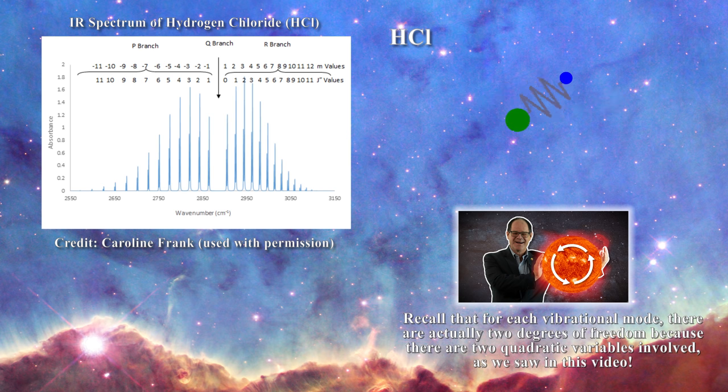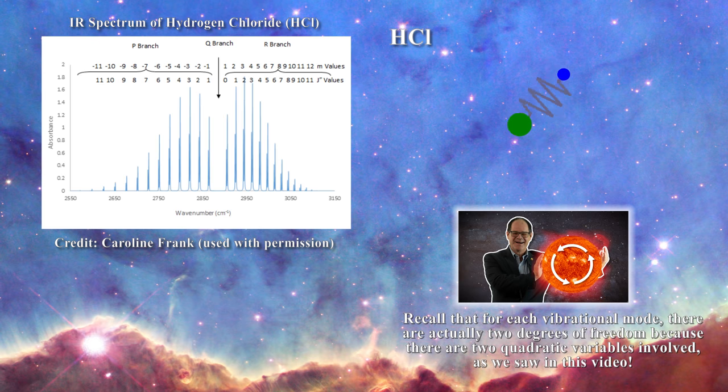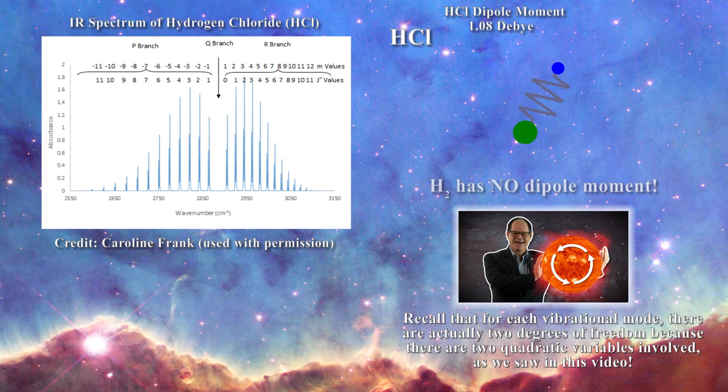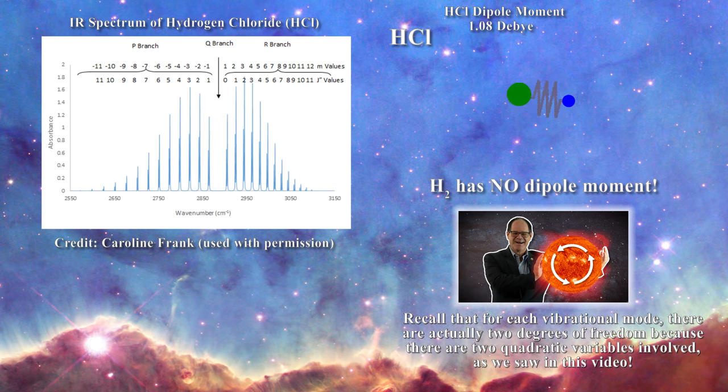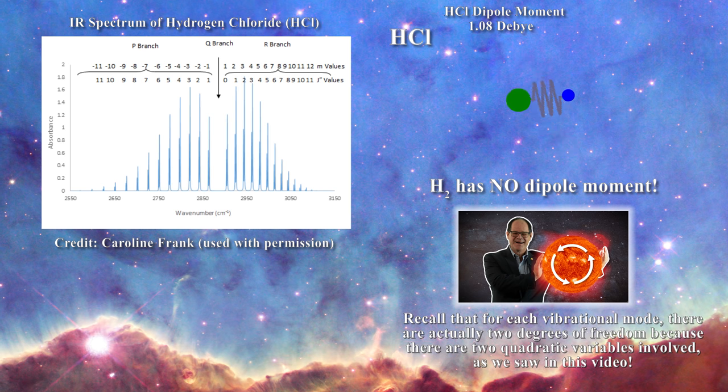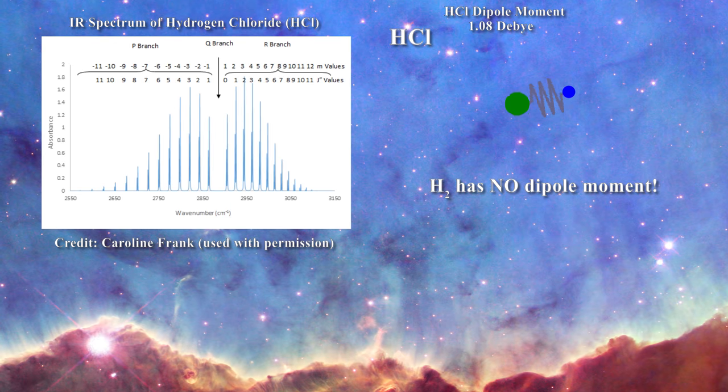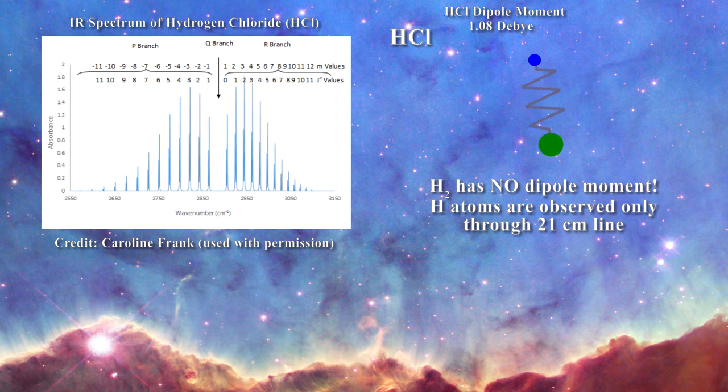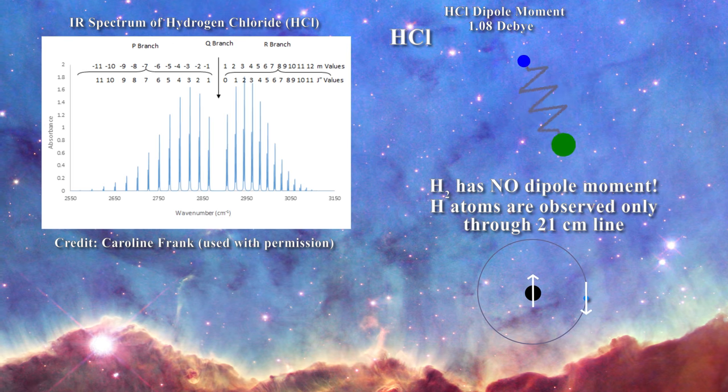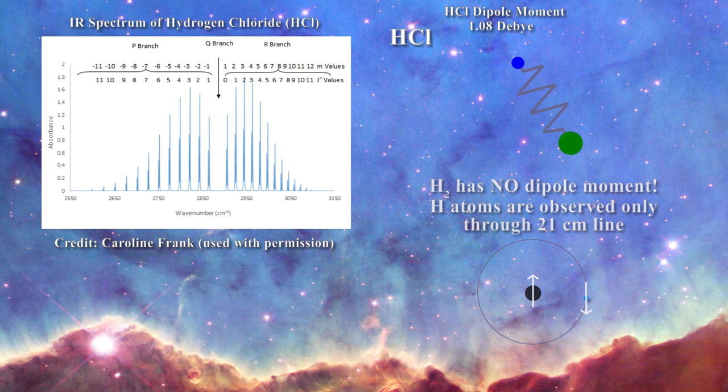In order to produce vibrational rotational lines, a molecule must possess a dipole moment. The hydrogen chloride molecule has a dipole moment of 1.08 debye. Conversely, the hydrogen molecule has no dipole moment. That is why molecular hydrogen never displays vibrational rotational lines. This helps to explain why the hydrogen molecule is so difficult to detect in astrophysics. It is observed only through the 21 centimeter line which is produced in a hydrogen atom when an electron spin flips from being parallel to anti-parallel to the proton spin. Hydrogen in astrophysics is not detected through vibrational rotational modes.